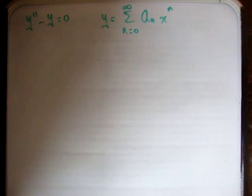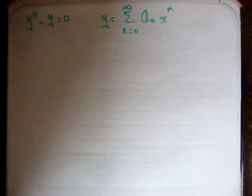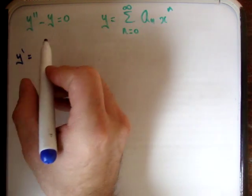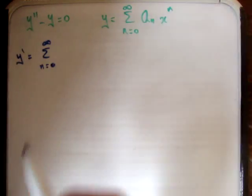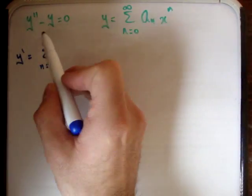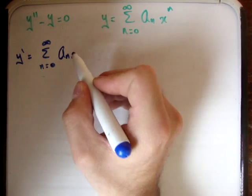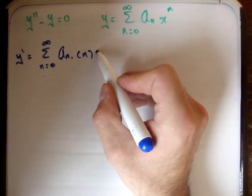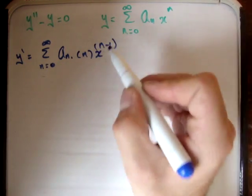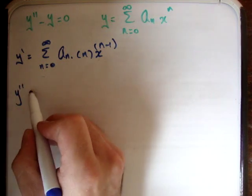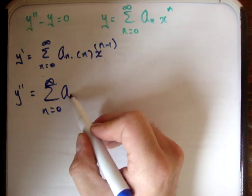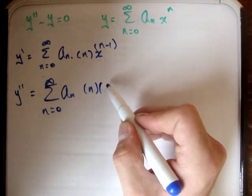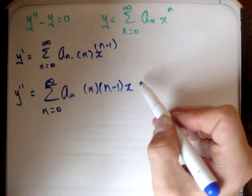The first thing we need to do is get the second derivative of this power series, which means we need to get the first derivative. So y prime is equal to the sum from n equals 0 to infinity of a sub n times n times x to the n minus 1. That means y double prime is equal to the sum from n equals 0 to infinity of a sub n times n times n minus 1 times x to the n minus 2.